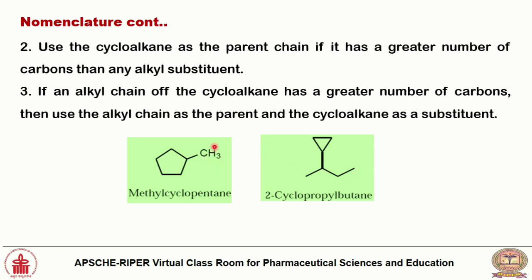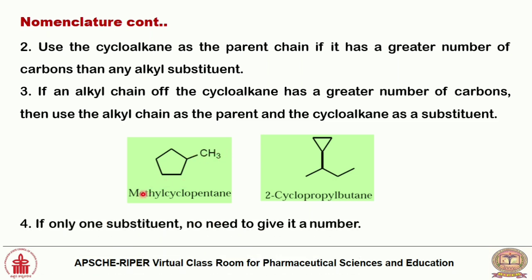If only one substituent is present, there is no need to mention a number for the substituent. We can represent it directly before the parent nucleus — for example, methylcyclopentane, where a methyl chain is attached to cyclopentane.